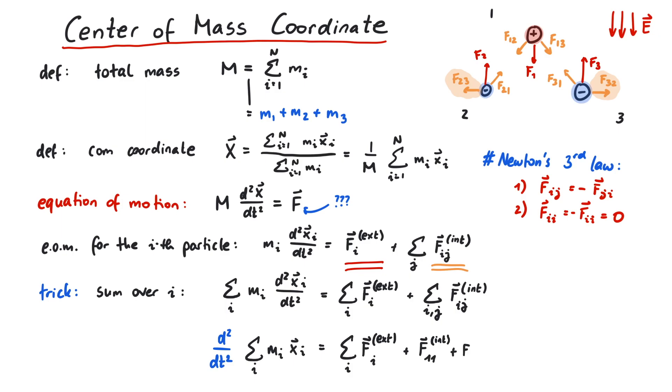If we write the first few terms, we see that all of them vanish. The 1,1, 2,2 and so on terms are zero by themselves, and every 1,2 term has a 2,1 term, which together cancel each other. We finally get back to our equation of motion for the center of mass coordinate, and see that the relevant forces are only the external ones.